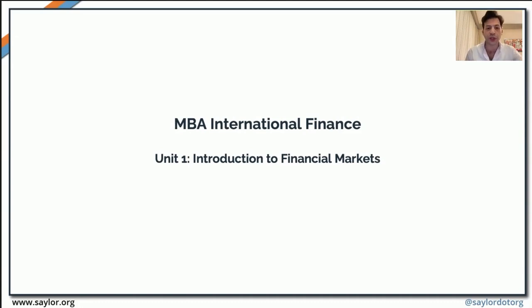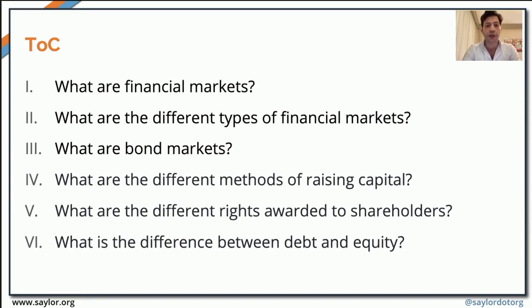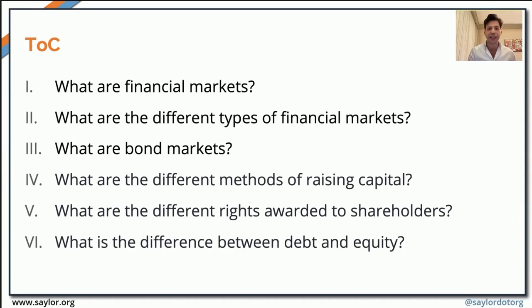Today, we'll look at the very first basis of finance and international finance. We'll examine what financial markets are, the different types of financial markets, and look at bond markets to differentiate between the two. Our course of action: we'll start with what financial markets are, differentiate between the different types, then move on to bond markets — what bonds are, where they're traded — and understand the different forms available to raise capital, including equity financing and debt financing.